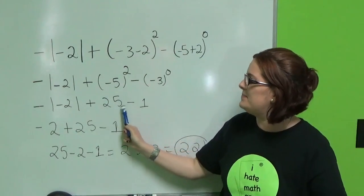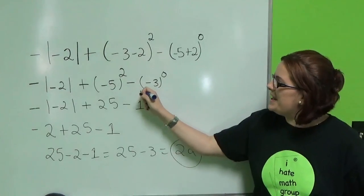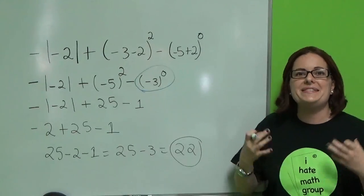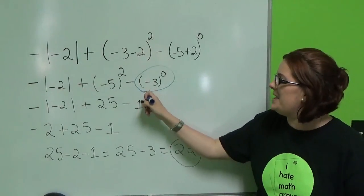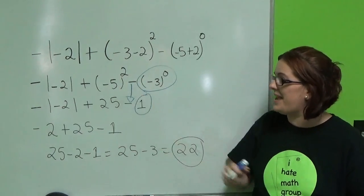Negative 5 times negative 5 is positive 25. But here you have to be careful. Negative 3 to the 0, we need to remember any number that is elevated to the 0 is going to be equals to 1. However, I still need to bring this negative down.